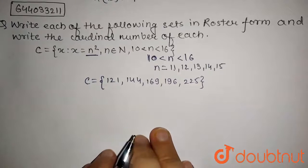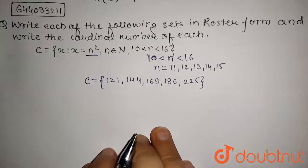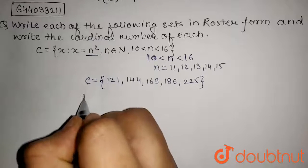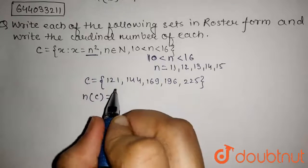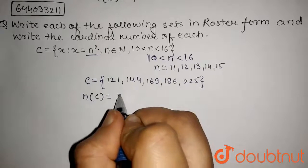Now we have to find the cardinal number. The cardinal number is the number of elements in a set, so the number of elements in this set is equal to 5.